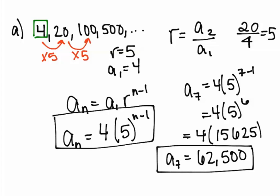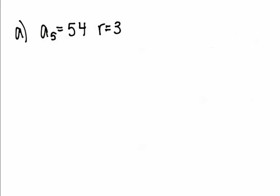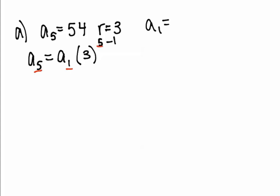The next example asks us to write a rule for the geometric sequence given one term and the common ratio. We are given the common ratio, and to write a geometric rule you need the common ratio and your first term. So we'll use the formula to find A1. A5 is our An. It equals A1 times r, which is 3, to the power of 5 minus 1. Make sure the 5 and 1 in your exponent match the term number.